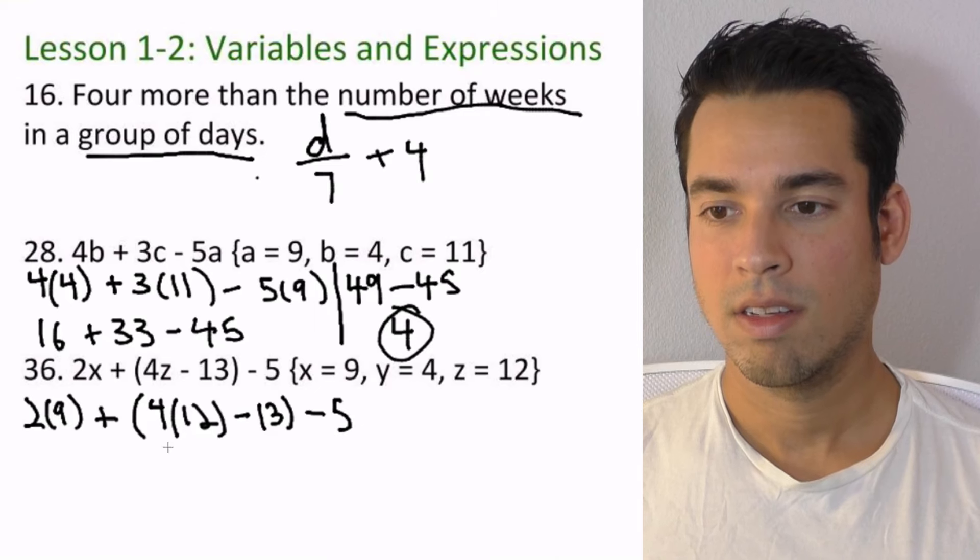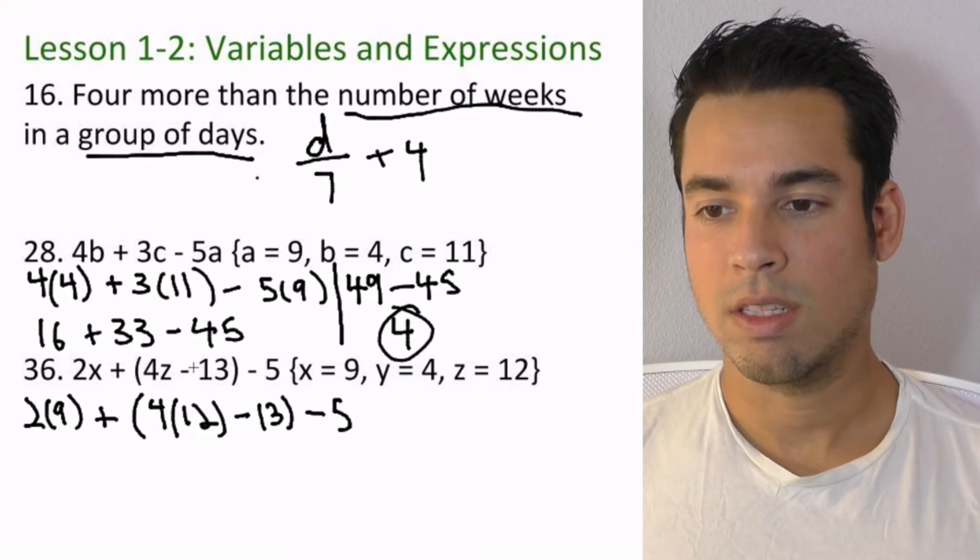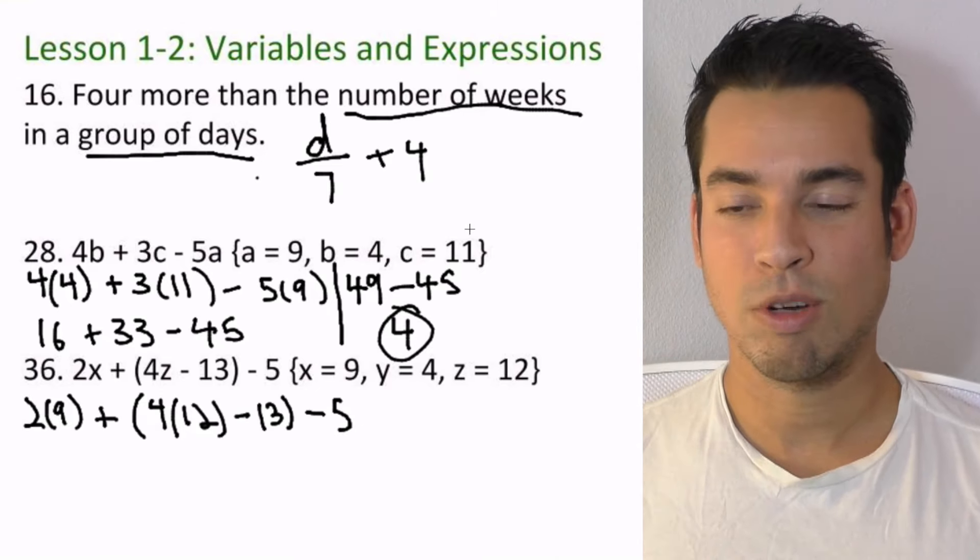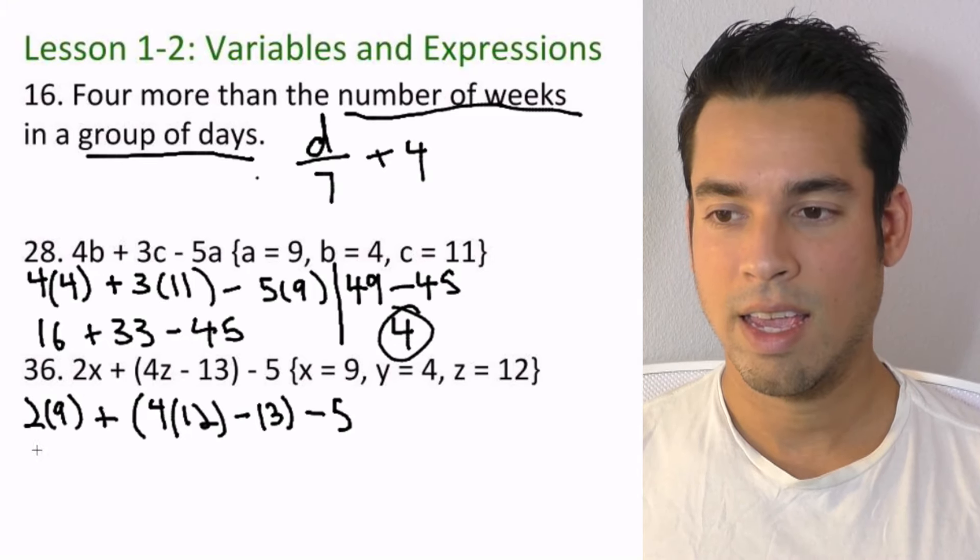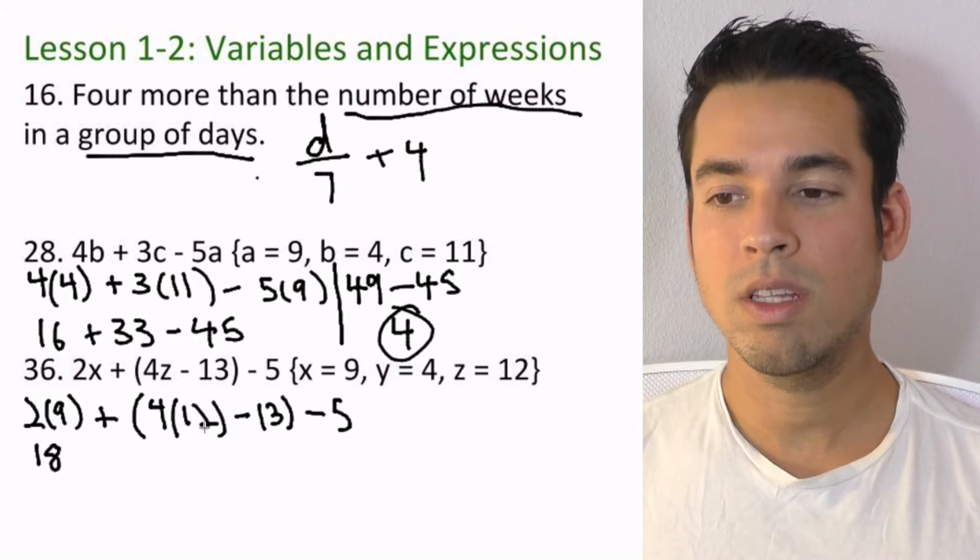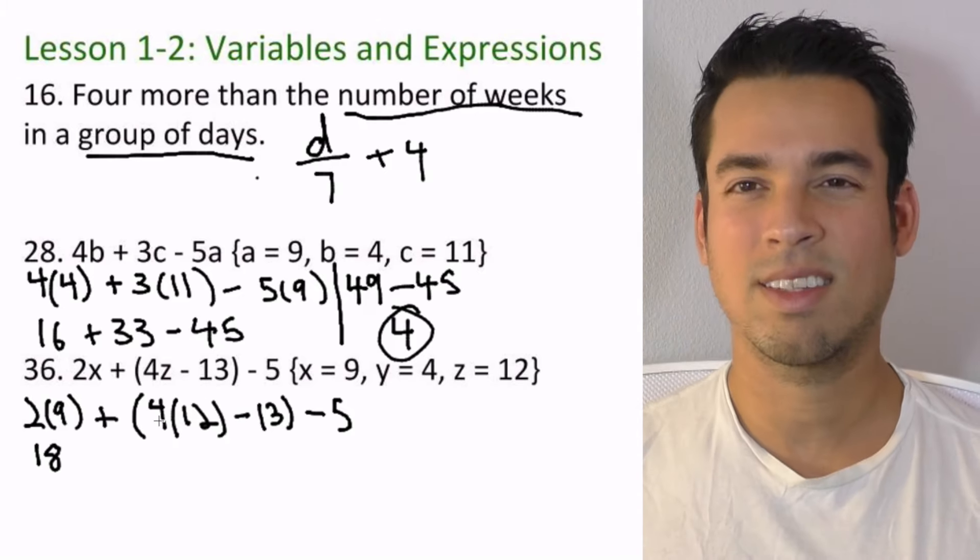So let's go ahead and evaluate this. No y apparently in this expression, it's all good. So what's two times nine? That's 18. Now really we should be doing this stuff first, but it kind of doesn't matter because this multiplication is going to happen before the addition happens anyways.